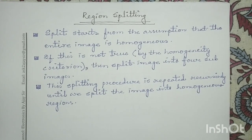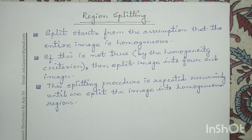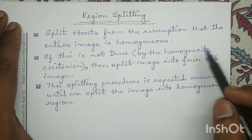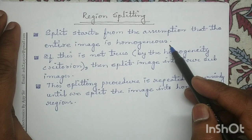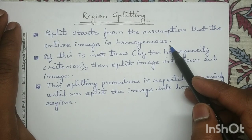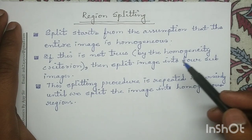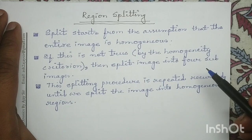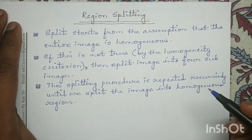Good morning all. Today we will discuss the region splitting method. Region splitting method is commonly used to create homogeneous regions in a given digital input image. It starts with the assumption that the entire image is homogeneous. Then we check the homogeneity condition. If it satisfies the condition, we will not split it. If it doesn't satisfy the condition, we will split it into 4 quadrants. This process is repeated until we get homogeneous regions.